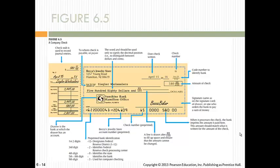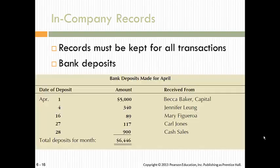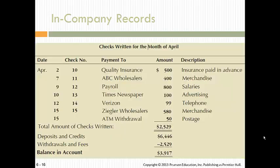Here's a picture of a check — most people are familiar with one. There is a routing number and an account number. If the written amount on the check does not match the amount expressed in figures, the bank may pay the amount written in words, return the check as unpaid, or contact the drawer to see what was intended. Records must be kept for all transactions. Here's a bank deposit showing all the deposits, and when checks are written there's a check register showing all the check numbers and information. If you're using a computer system like QuickBooks, you get a more technical-looking check register.